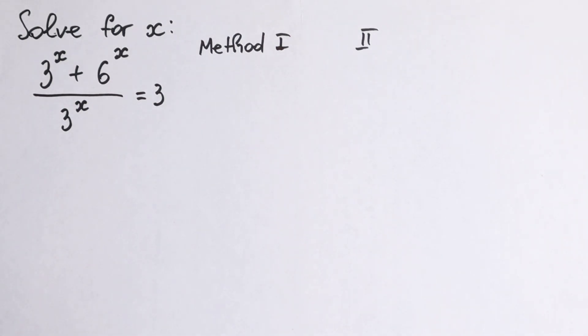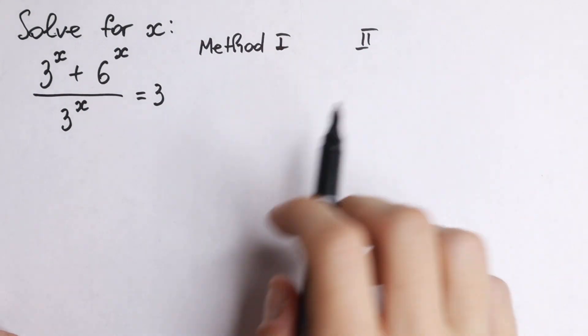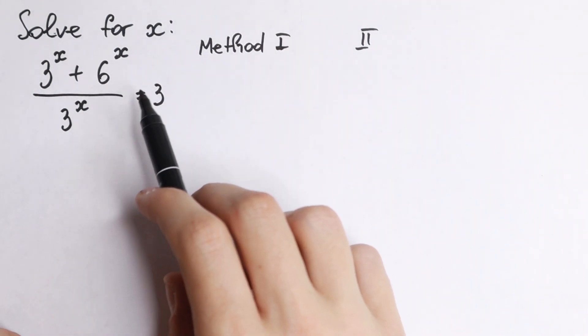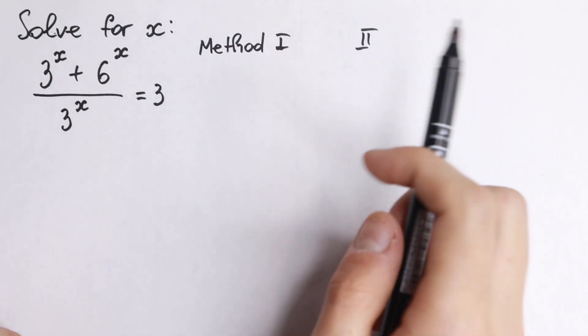Hello everyone, welcome back to MathMode. Really good exponential equation today, and I'm going to show you two methods how we can solve it. We have 3 to the x plus 6 to the x all over 3 to the x equal to 3.